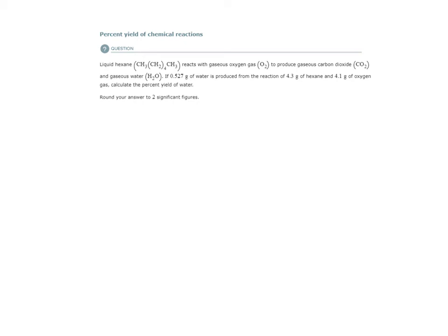Alright, so we have liquid hexane, another combustion reaction of this hydrocarbon, and we are asked to calculate the percent yield of water. Our starting amounts, we have 4.3 grams of hexane and 4.1 grams of oxygen, and we were able to obtain a small amount of water here.